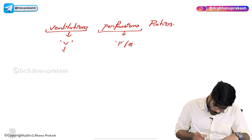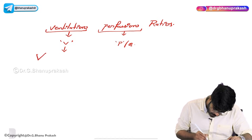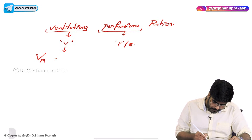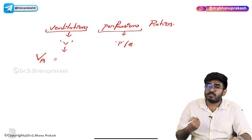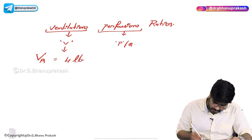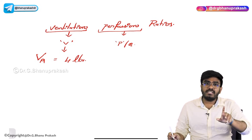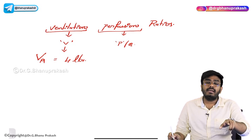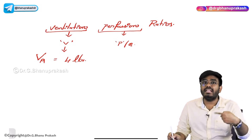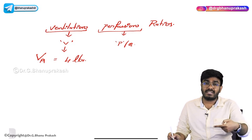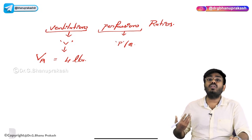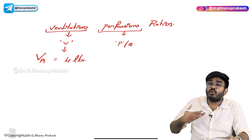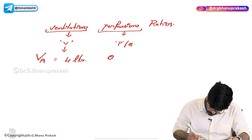We have seen what is the true ventilation, or alveolar ventilation — that is the amount of air going to the alveolus every minute, which is 4 liters. Minute ventilation is 6 liters, but out of that 6 liters, only 4 liters is really involved in gaseous exchange — that is the alveolar ventilation. Perfusion is the blood flow to the lungs, which is 5 liters per minute.